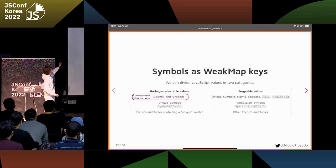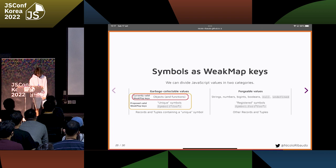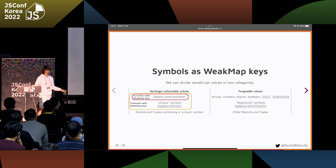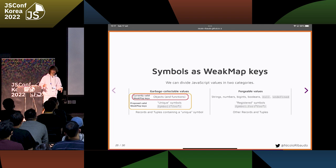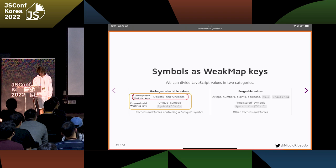At the moment, only objects are allowed as WeakMap keys. As you might imagine, this proposal extends valid WeakMap keys to also include unique symbols, so that we can now use WeakMaps to actually have this symbol-to-object mapping to put things in records and tuples.